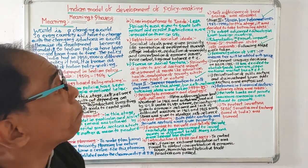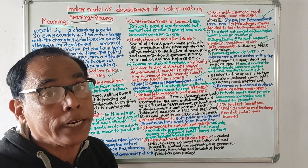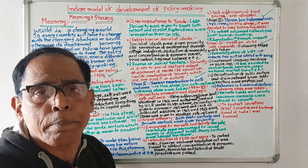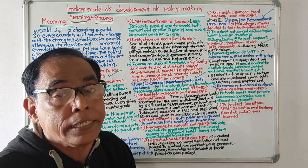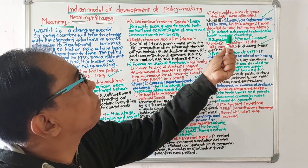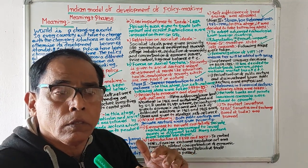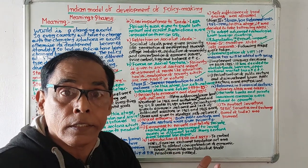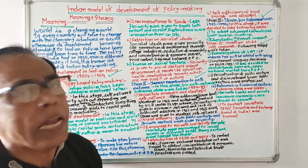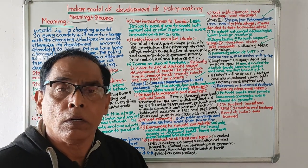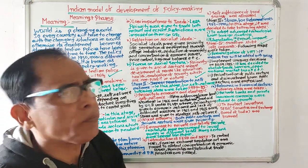The fifth change in Stage 2 was steps taken toward self-sufficiency in food. Moving to Stage 3, from 1985 to 1990, there were further changes. The first was adopting advanced technologies from foreign countries — Indian policymakers showed interest in doing this. The second was liberalization in import and export, which was encouraged during this period.